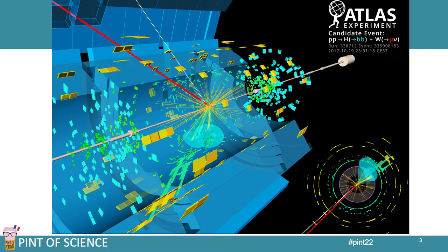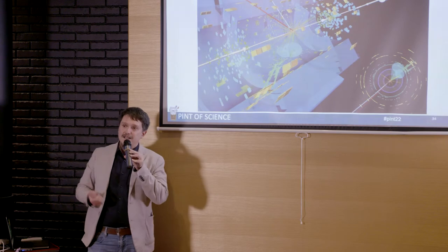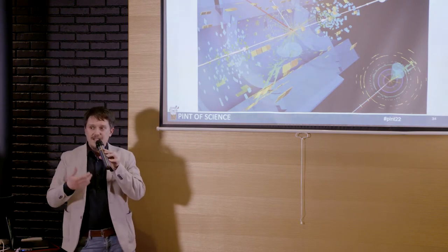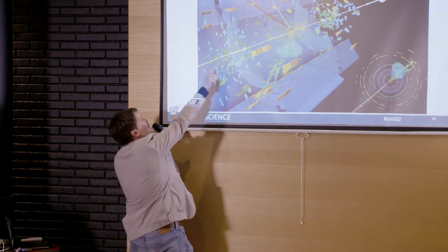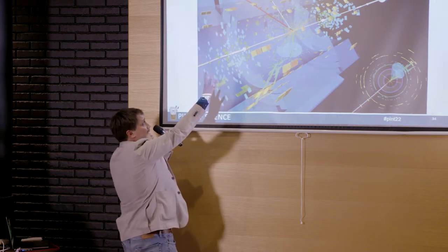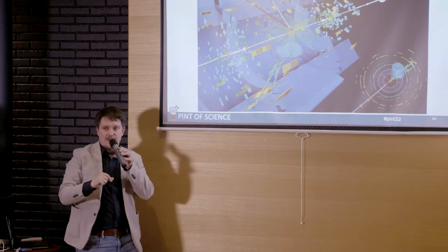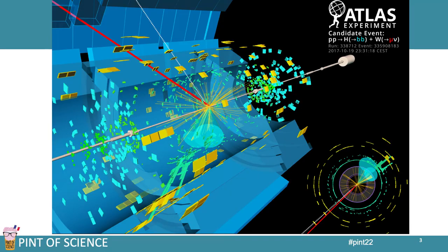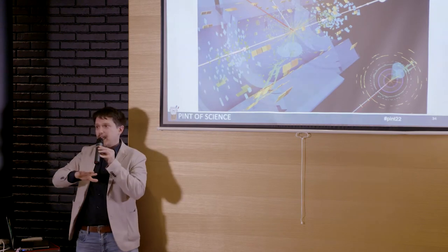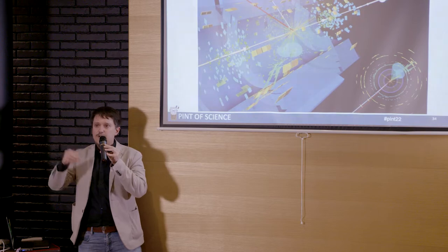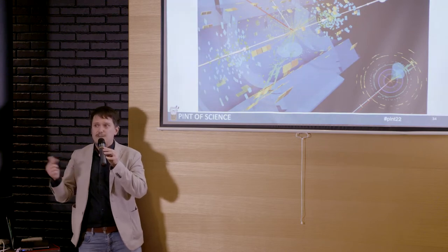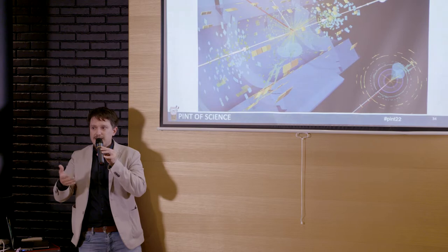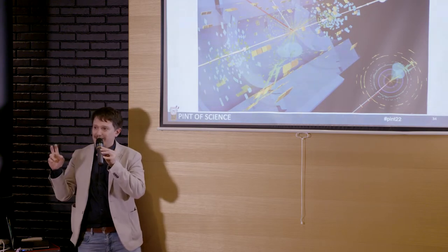This is a graphic representation of my job. What we have here is a computer representation of an event — we call this an event display — because it is displaying the collision of two particles. You have to imagine protons coming this way and the opposite way, colliding at the point where you see this spray of colored objects. We use particles, make them collide, and study the result. Protons are everywhere in the universe; they are in the nuclei of atoms, and everything we can see is made of atoms.